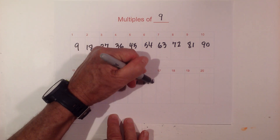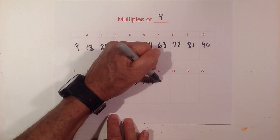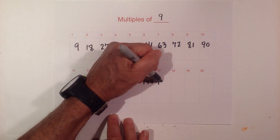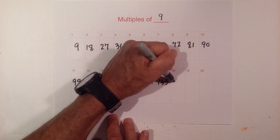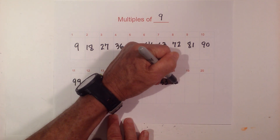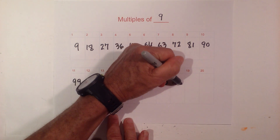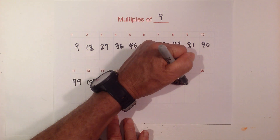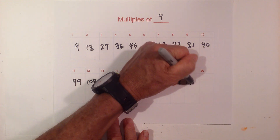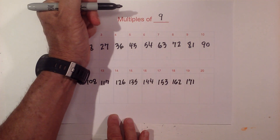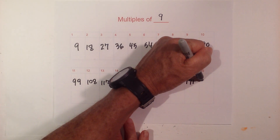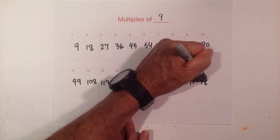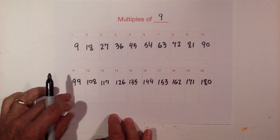144, 153, 162, 171, and then 9 times 20 is 180.